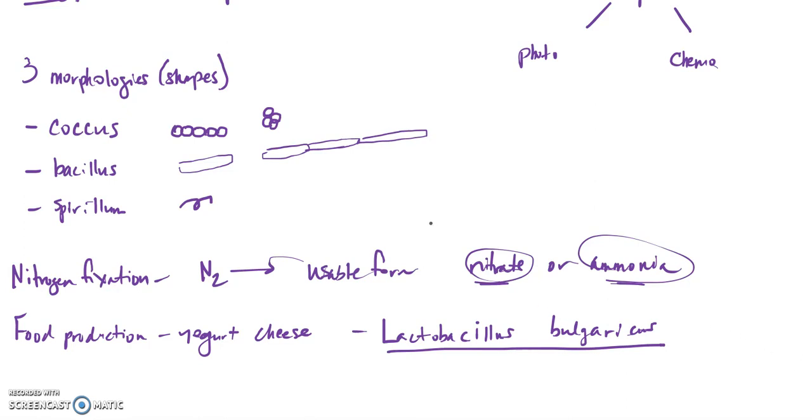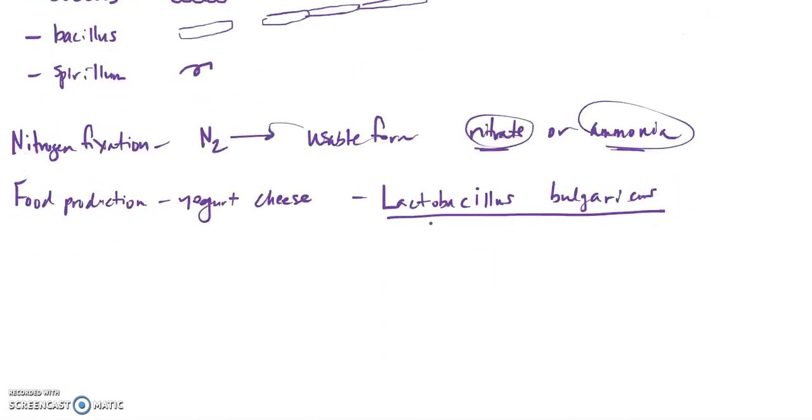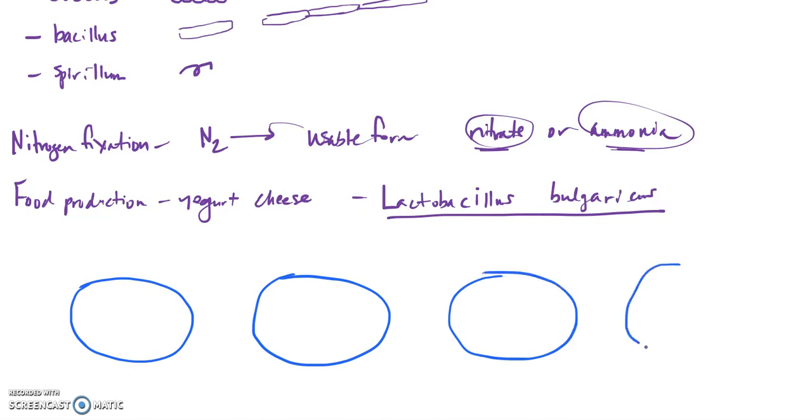All right, so now let's talk about your procedure. You had, at the beginning, you had four petri dishes. And you had something called agar, actually nutrient agar.